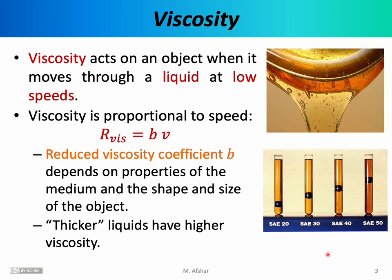If you've ever changed the engine oil in your car, you know that motor oil comes rated as 10W30 or 20W40. Those numbers refer to a range of viscosity values, and the way the Society of Automotive Engineers determines these viscosity coefficients is by dropping a standard-size ball bearing into the oil and timing its travel from the top to the bottom of the test tube. The oil on the right has the highest viscosity rating, so the ball bearing encounters the largest viscous force and takes the longest time to reach the bottom.